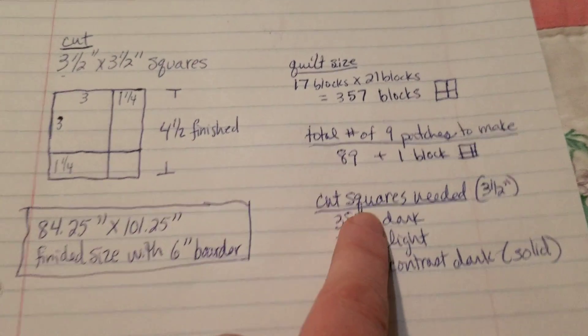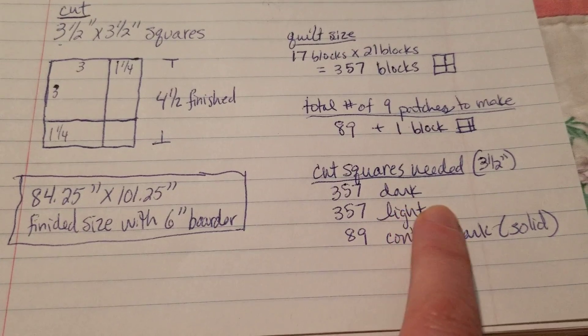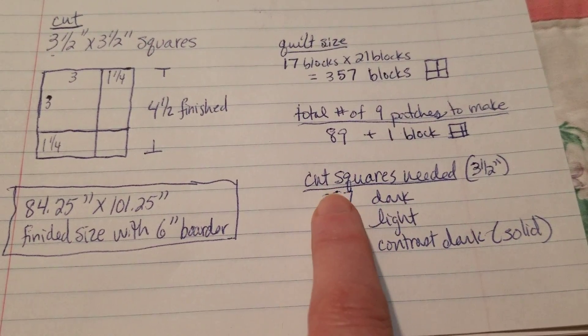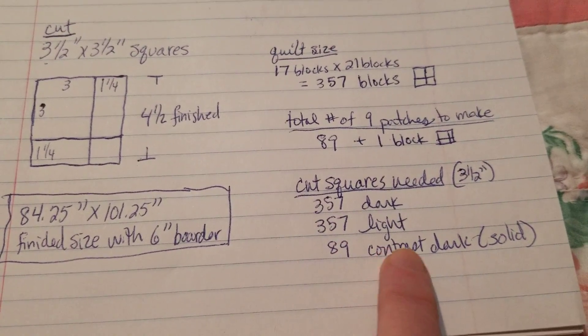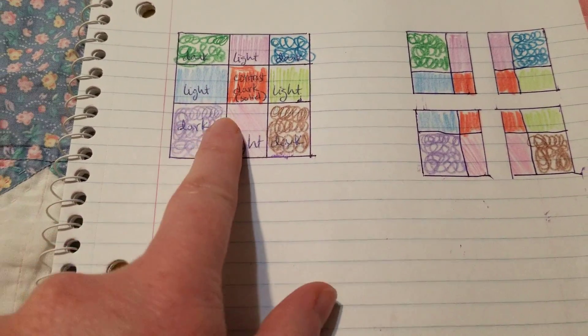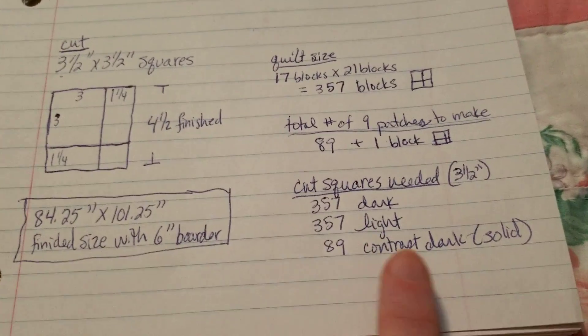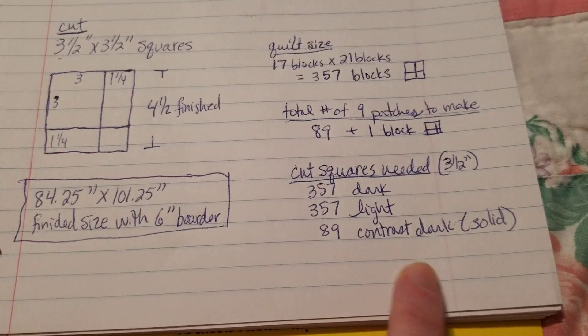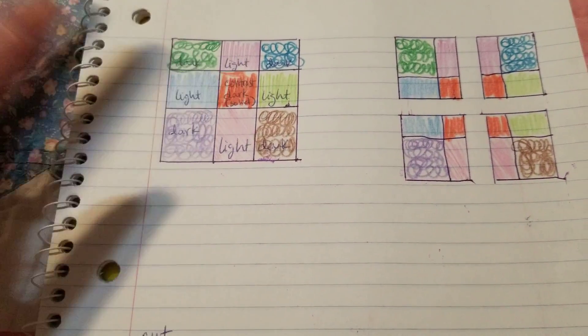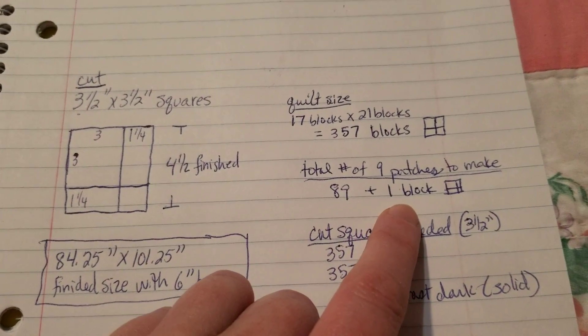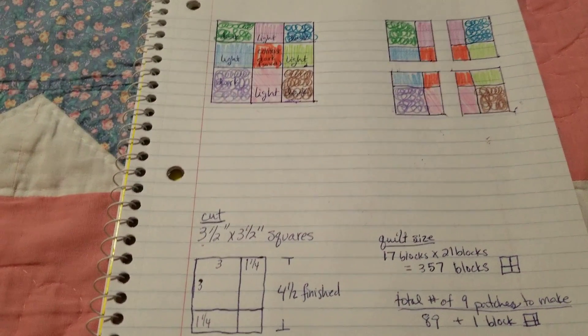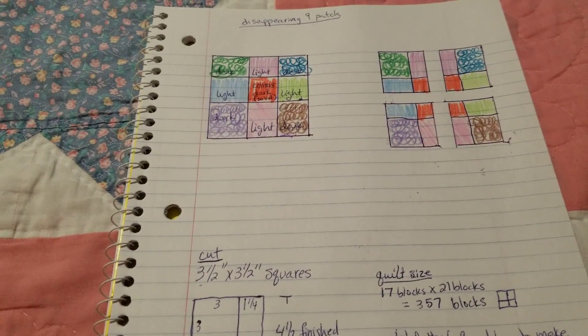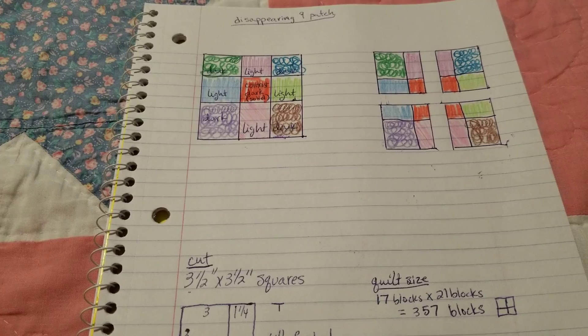Basically what I've decided: I need to cut 357 dark squares that are three and a half inches, and 357 light squares because there's four in each of my nine patches. For the center I just need 89 contrasting squares—well actually I'll need 90 because I'll need one more, one extra. Yeah, that's what I'm going to do. Like I said, I'll keep all my videos linked in a playlist as I make them. Next I have to pick out fabric—that's what we'll talk about next. Thanks for watching.